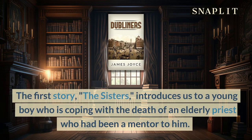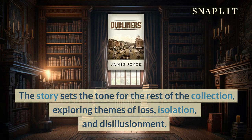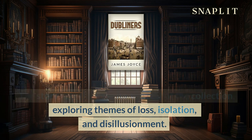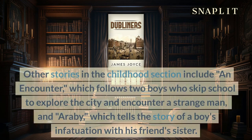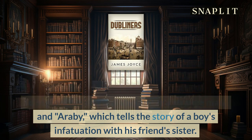The first story, The Sisters, introduces us to a young boy who is coping with the death of an elderly priest who had been a mentor to him. The story sets the tone for the rest of the collection, exploring themes of loss, isolation, and disillusionment. Other stories in the childhood section include An Encounter, which follows two boys who skip school to explore the city and encounter a strange man, and Araby, which tells the story of a boy's infatuation with his friend's sister.